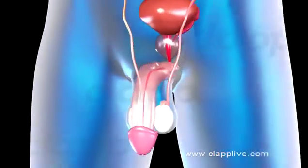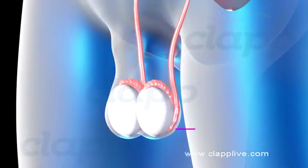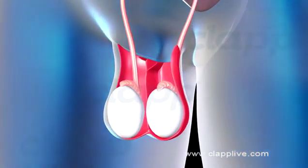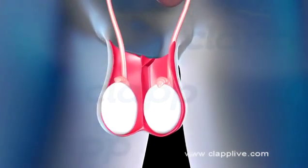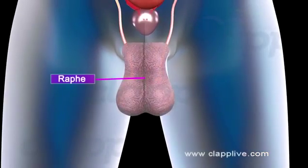Testes are the primary sex organ of the male and are suspended in the scrotal sacs. The scrotum is a pouch of pigmented skin arising from the lower abdominal wall and hanging between the legs. It is divided internally into right and left scrotal sacs by a muscular partition called the septum scrotae, which is externally marked by a median ridge called the raphe.